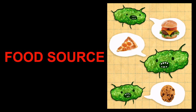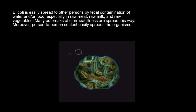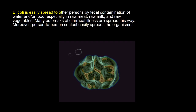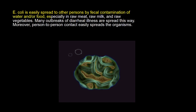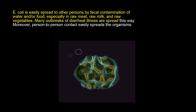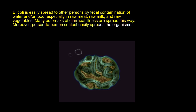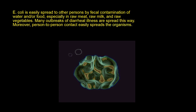Food source: E. coli is easily spread to other persons by fecal contamination of water and of food, especially in raw meat, raw milk, and raw vegetables. Many outbreaks of diarrheal illness are spread this way. Moreover, person-to-person contact easily spreads the organism.